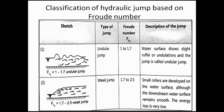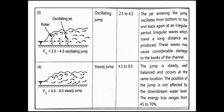The weak jump has small rollers developed on the surface of the water with very low energy loss. The oscillating jump oscillates from bottom to top and back at an irregular period, producing waves that travel a long distance and may cause considerable damage to the channel bank. The steady jump has a Froude number of 4.5 to 9; it is not moving forward, and energy loss is in the range of 45 to 70 percent.